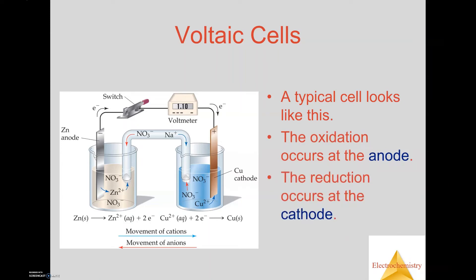Voltaic cells have several different parts. You're going to have two beakers on opposite sides. For our copper and zinc example, on the right-hand side you have the copper metal and the copper²⁺ ion solution — you would dissolve copper(II) nitrate into it. The copper metal and solution are complementary to each other, creating one half-cell of the voltaic cell. The zinc is then placed into the zinc ion solution on the left-hand side, forming the other half-cell. This represents each half-reaction, just as we discussed when balancing redox reactions using the half-reaction method.